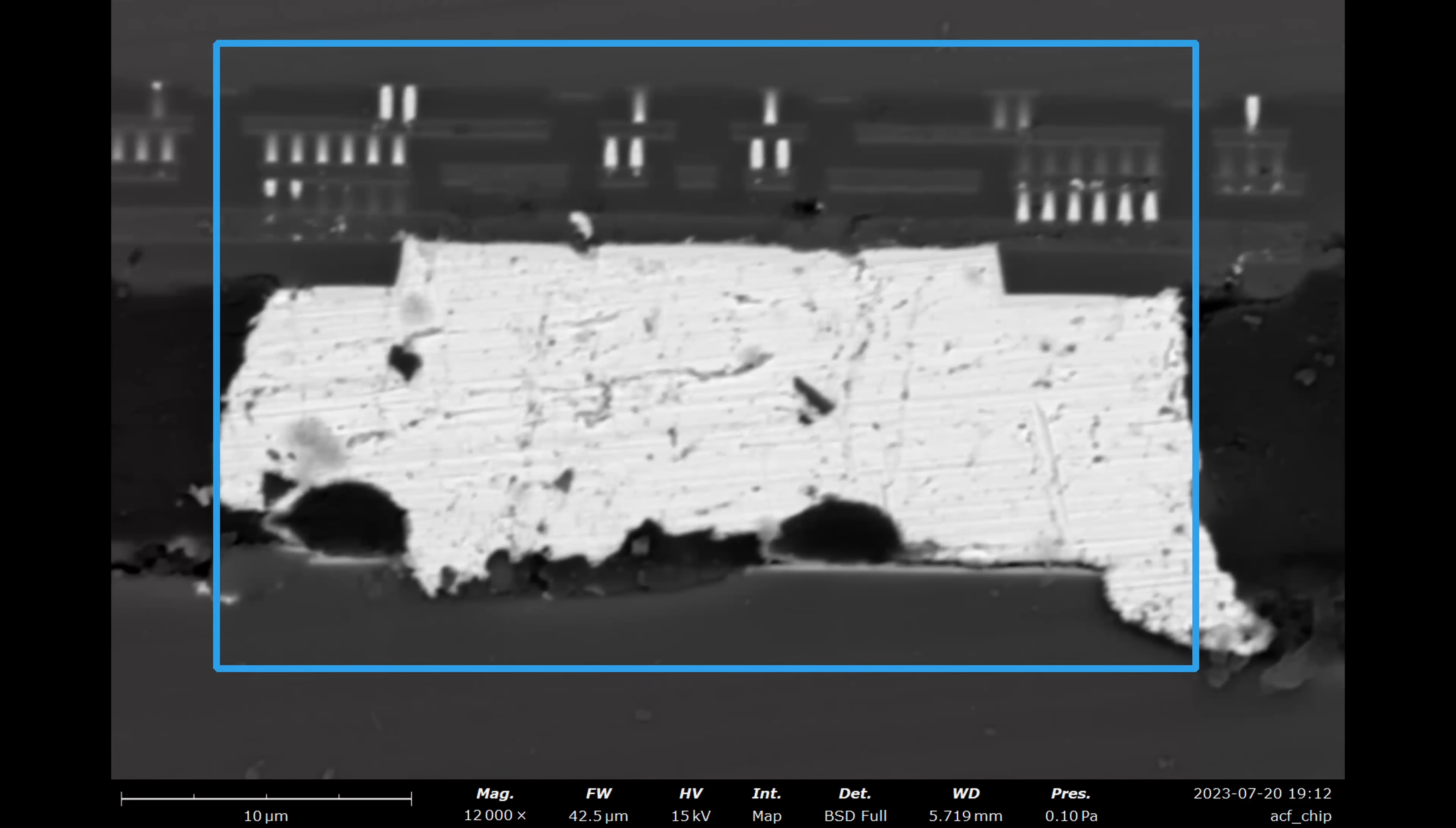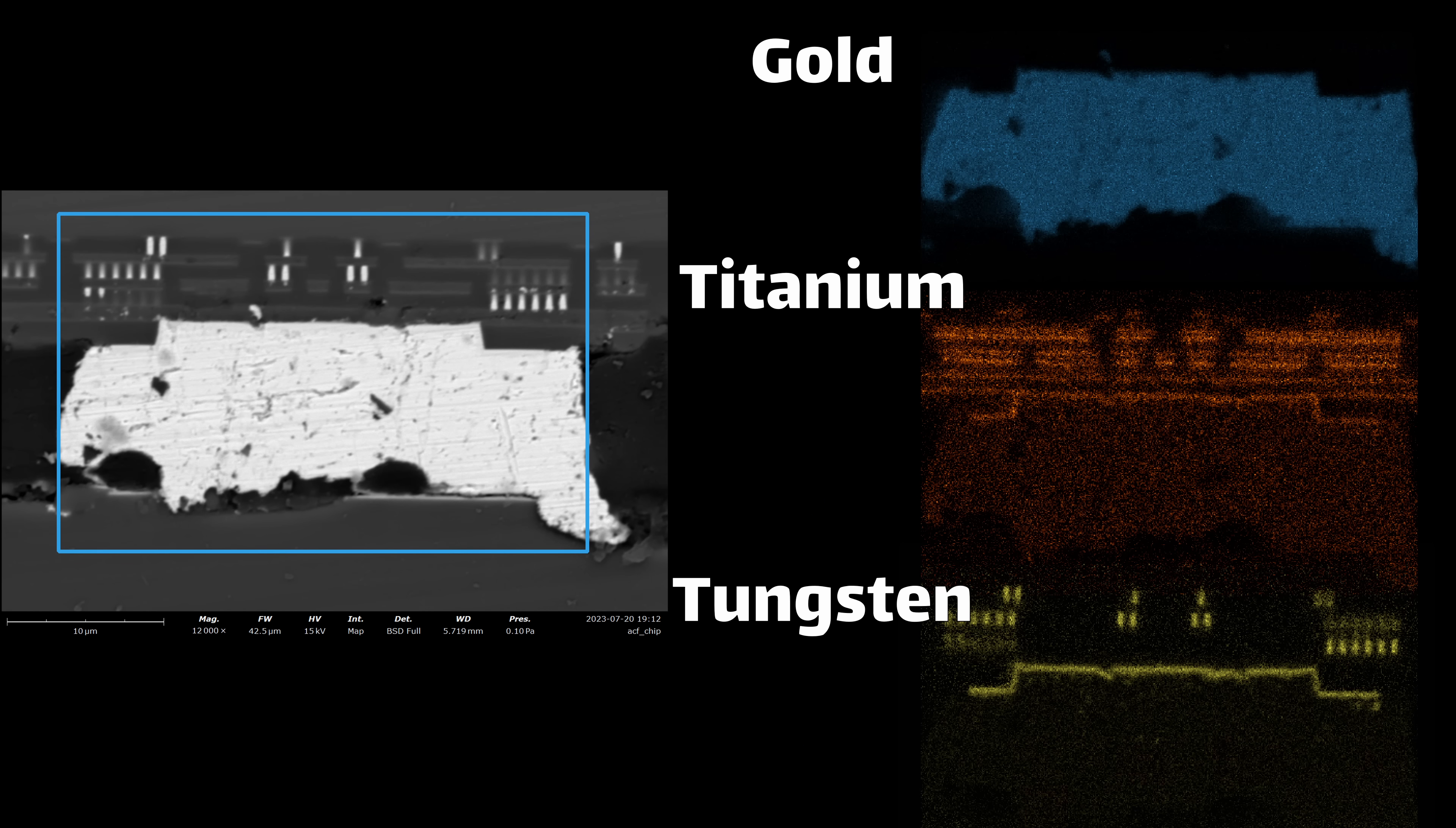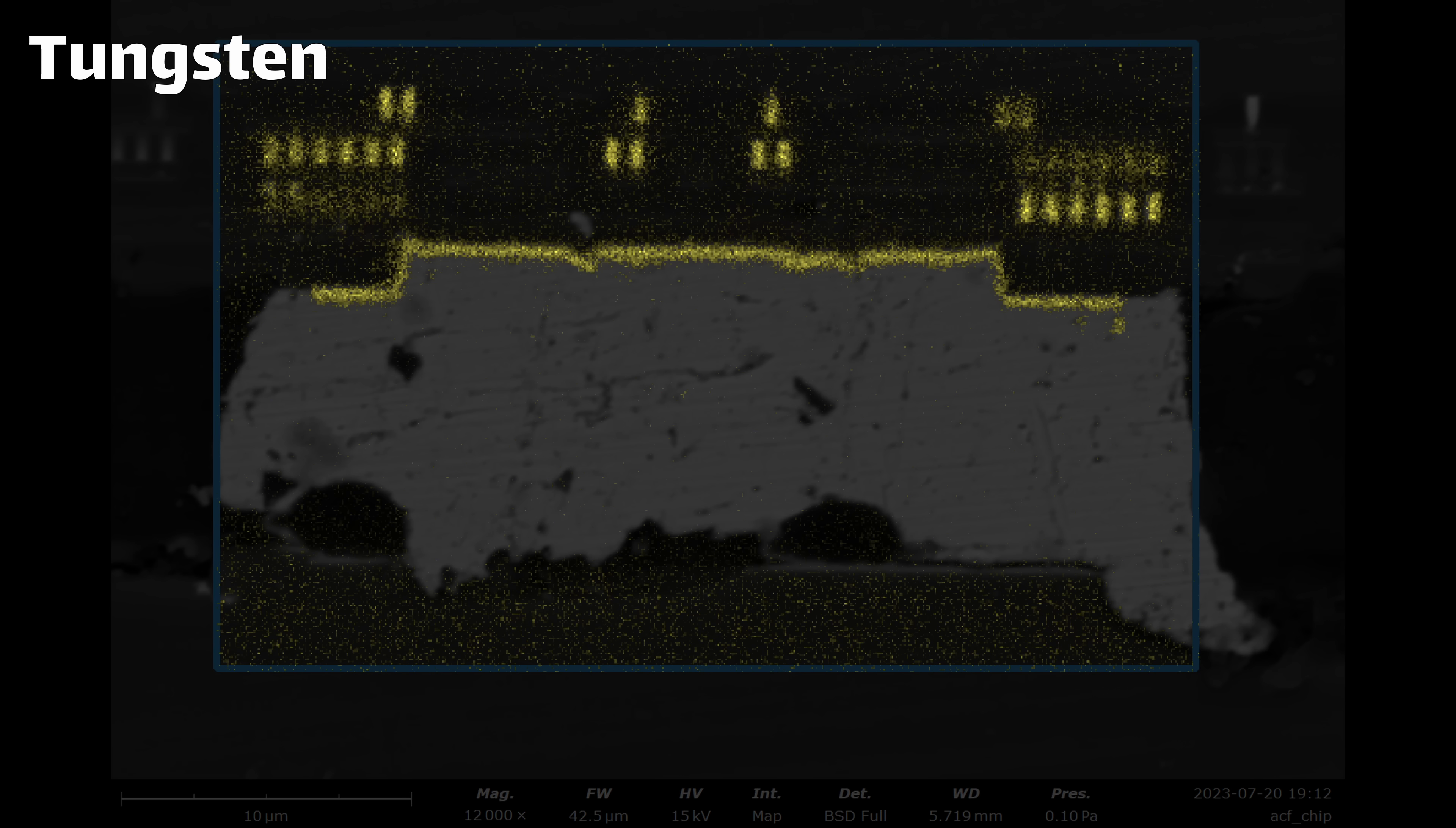Going back to the element detector on the SEM, we can see that the pad is made from gold this time instead of copper. And there's a thin titanium and tungsten layer right underneath the gold. Titanium tungsten is often used as an adhesion layer to help other metals stick better, and it can also act as a diffusion barrier to keep metals from migrating around.